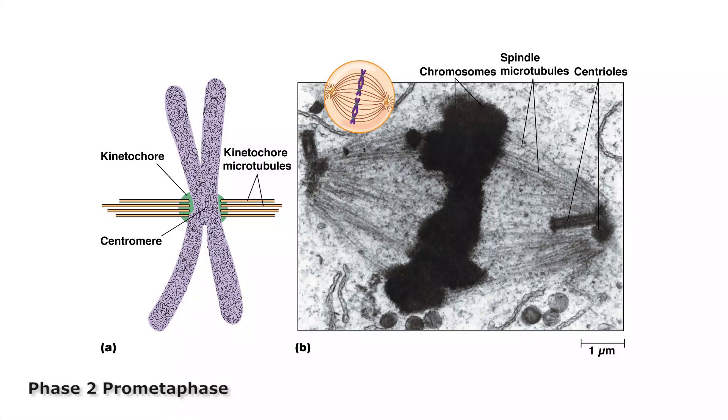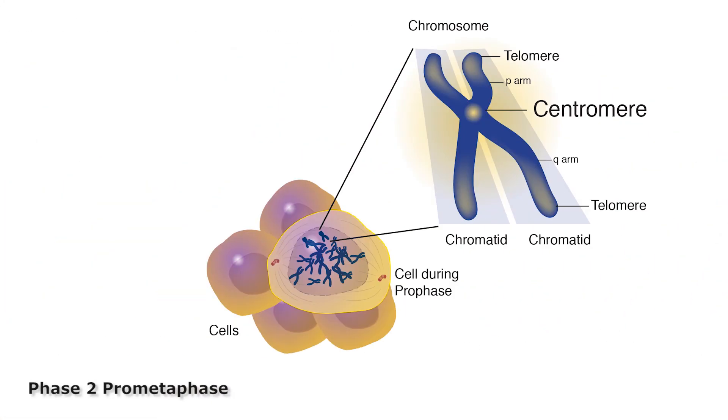Phase 2 is prometaphase. During prometaphase, proteins called kinetochores form around the cell's centromere.